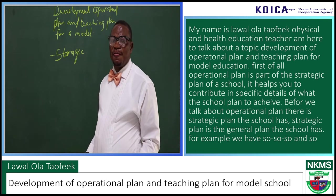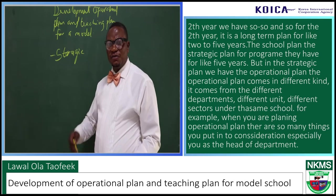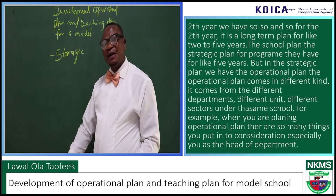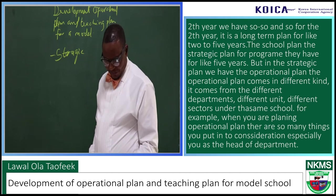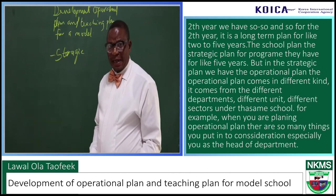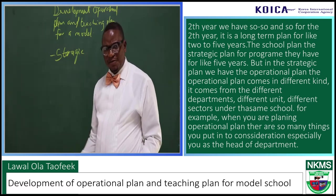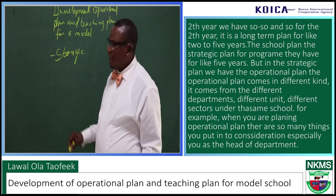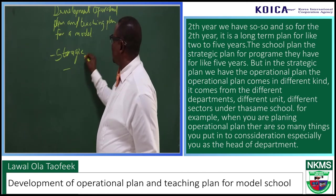For example, this year we have certain goals, next year we have other goals. It is a long-term plan for like two to five years — a school's strategic plan for programs they have over five years. But within the strategic plan, we have the operational plan.